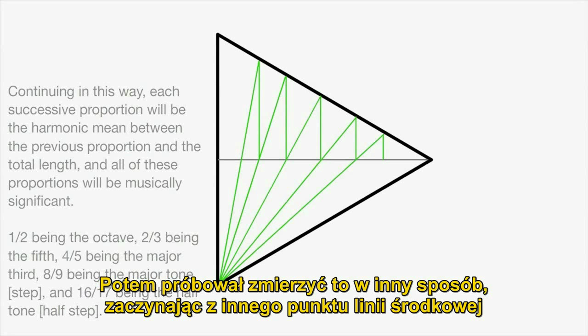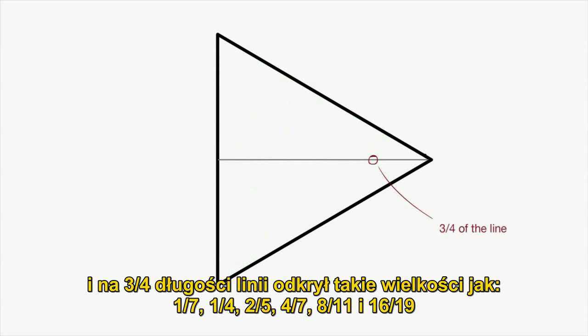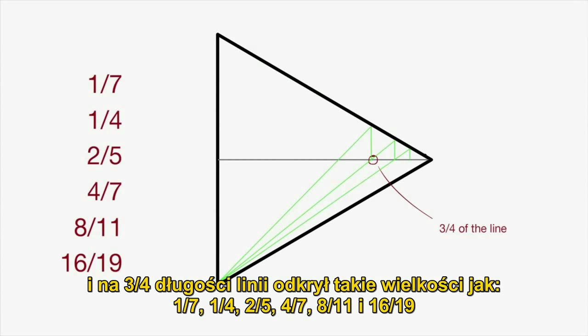Then he tried measuring it in a different way, starting at a different point of the center line. At 3/4ths, he found the measurements were 1 over 7, 1 over 4, 2 over 5, 4 over 7, 8 over 11, and 16 over 19. All of these numbers are musically significant.